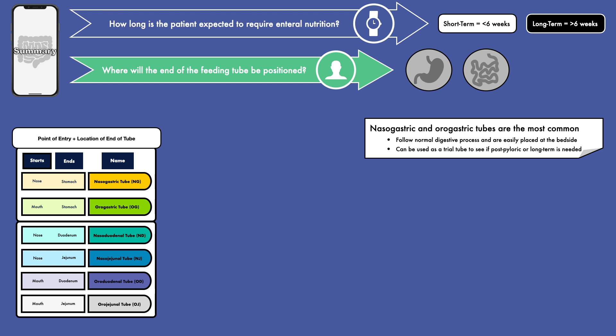The nasogastric tube and orogastric tube are the most common and are considered advantageous because they follow the normal digestive process and are easily placed at the bedside. They can also be used as a trial tube to see if a post-pyloric tube or long-term feeding tube is needed.